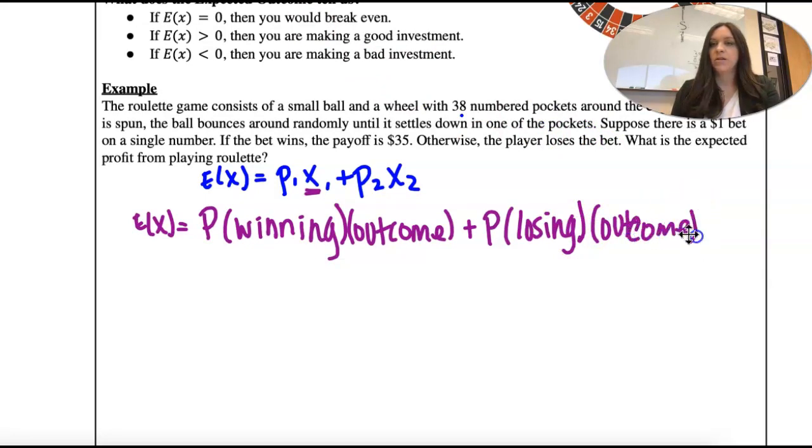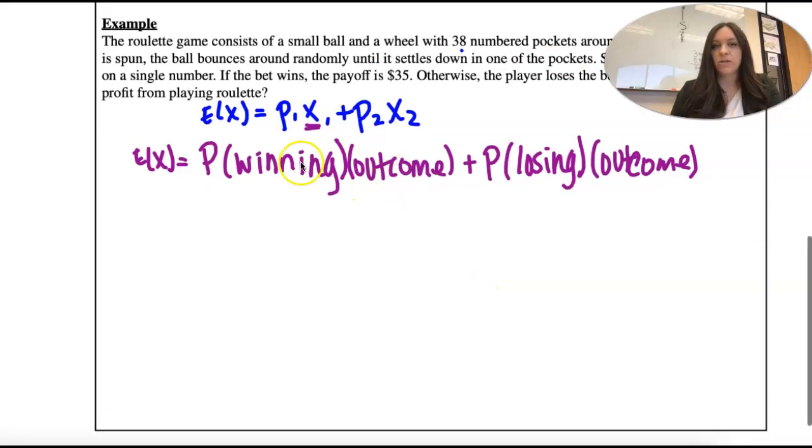Okay, so sometimes it helps to write it out. Well, so think about if I win, I'm going to get $35. That's the outcome. If I lose, I'm going to lose that dollar that I put in. So minus 1.